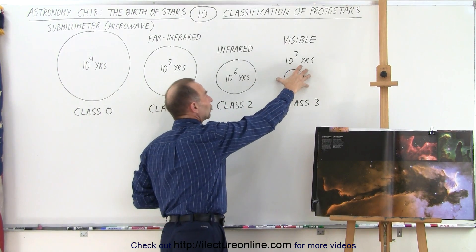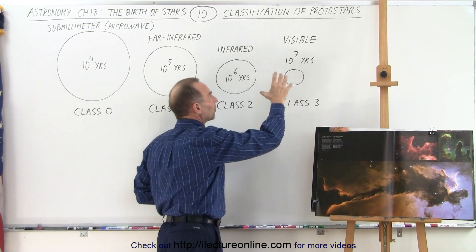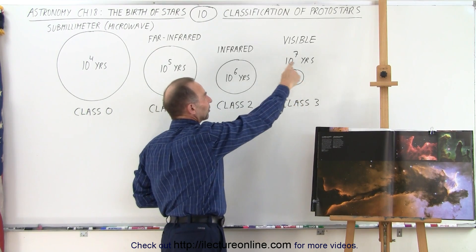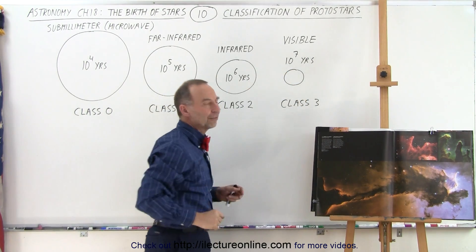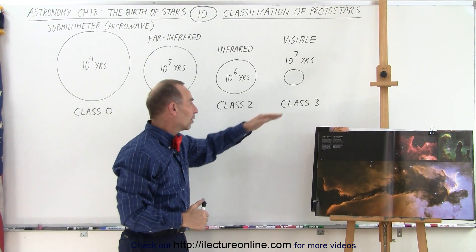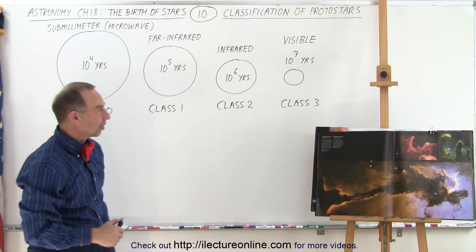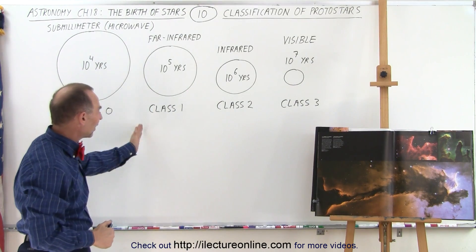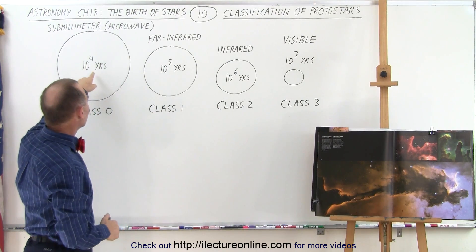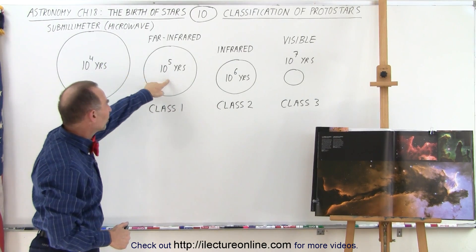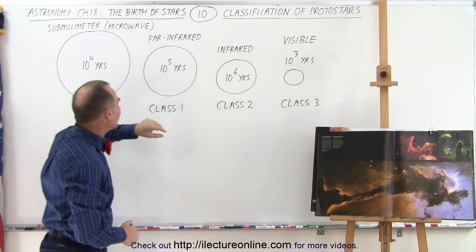Basically, we get a reddish glow to a reddish-orange glow from a protostar, with temperatures of several thousand degrees at the surface giving us the visible light — this is the class three type of protostar. You can see it's classified in various stages, and you can also see how much time it spends at each stage giving off that kind of radiation.